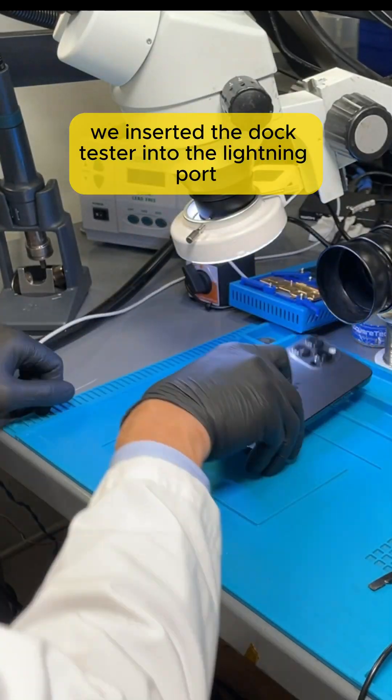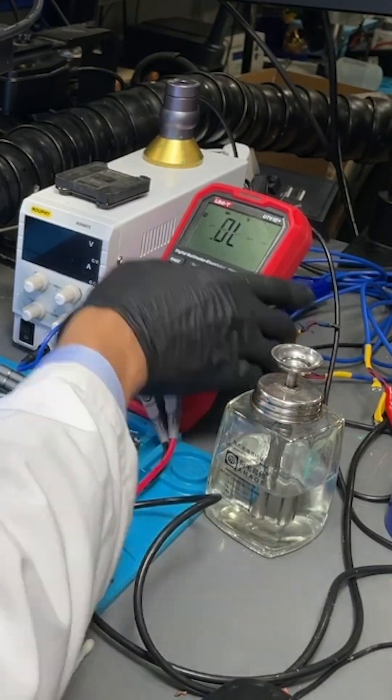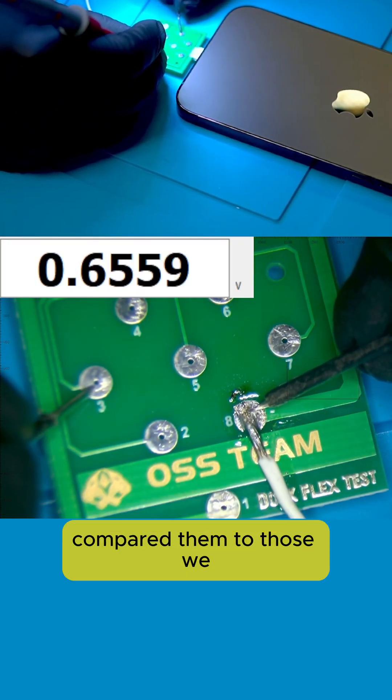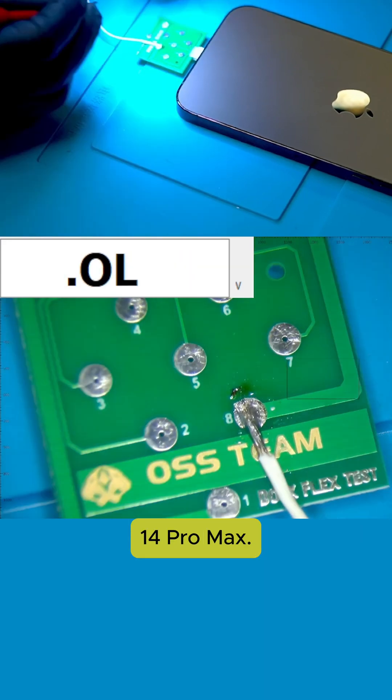Next, we inserted the dock tester into the lightning port and set the multimeter to diode mode. We recorded the readings and then compared them to those we had taken from a working iPhone 14 Pro Max.